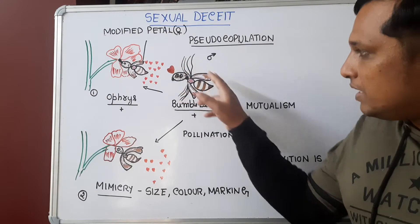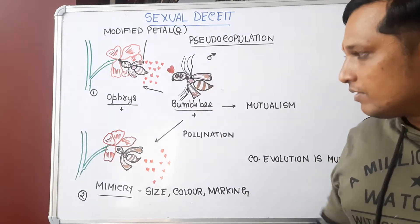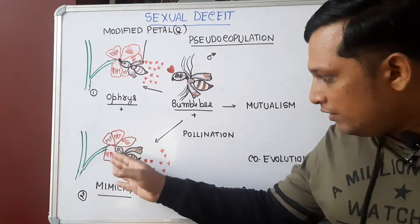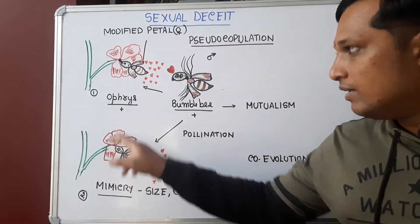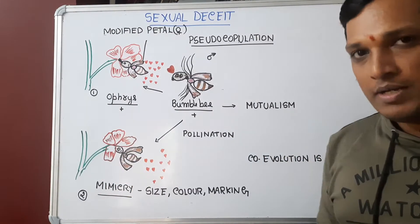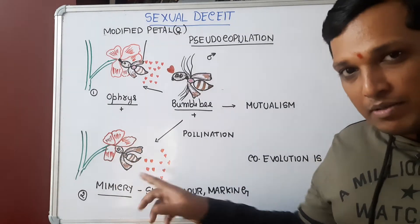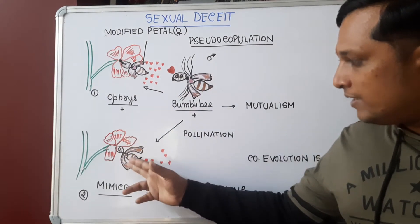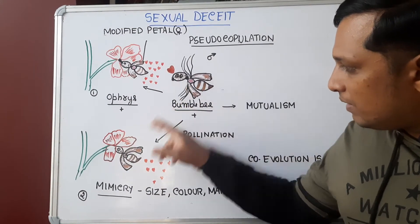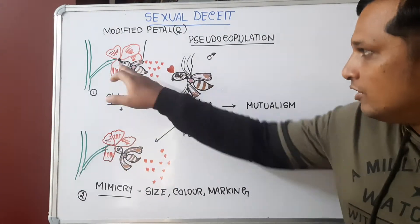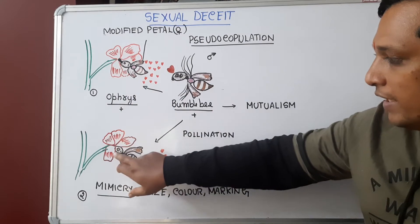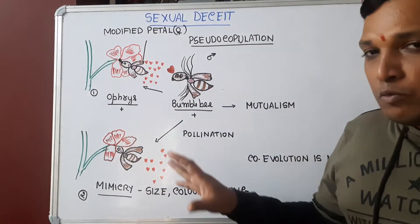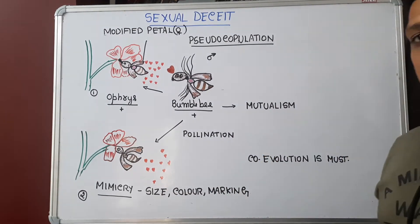Once copulation is over, the male bee — having received the pollen grain — goes in search of another female. If it comes in contact with another Ophrys flower that also has the modified female-bee petal, the male bee carrying the pollen grain copulates with it. During this process, the pollen grain present on the male bee is transferred onto the second flower. This is how pollen from one flower is pollinated to another.